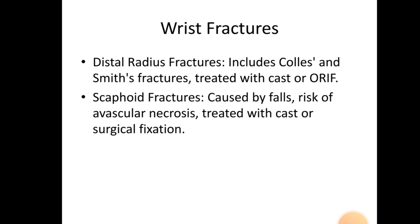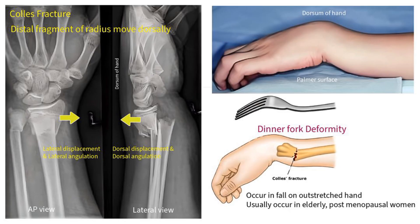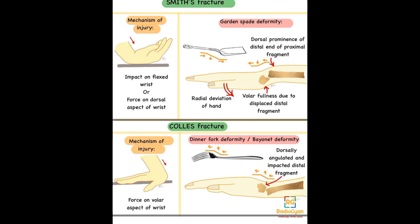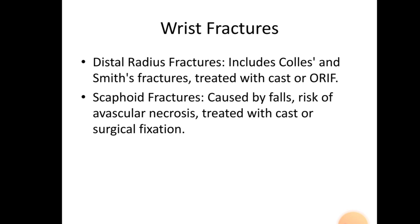Wrist fractures include distal radius fractures — specifically Colles' and Smith's fractures — treated with a cast or ORIF. Smith's fracture results from impact on a flexed wrist with force on the dorsal aspect, while Colles' fracture involves force on the volar aspect of the wrist. Scaphoid fractures are caused by falls, carry a risk of avascular necrosis, and are treated with a cast or surgical fixation.